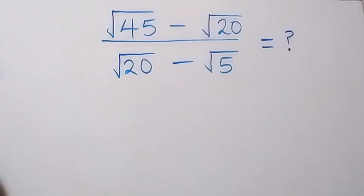Hello, you are welcome. How to solve this nice math problem involving square root. We have square root of 45 minus square root of 20, over square root of 20 minus square root of 5.